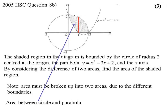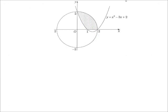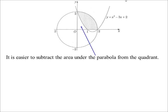We split into two areas: the area between the circle and the parabola, and the area between the circle and the x-axis. However, looking at the shape more cleverly: I don't need to integrate to find the area of a circle — I have a formula. So I'll use the area of a quadrant minus the area under the parabola from zero to one.